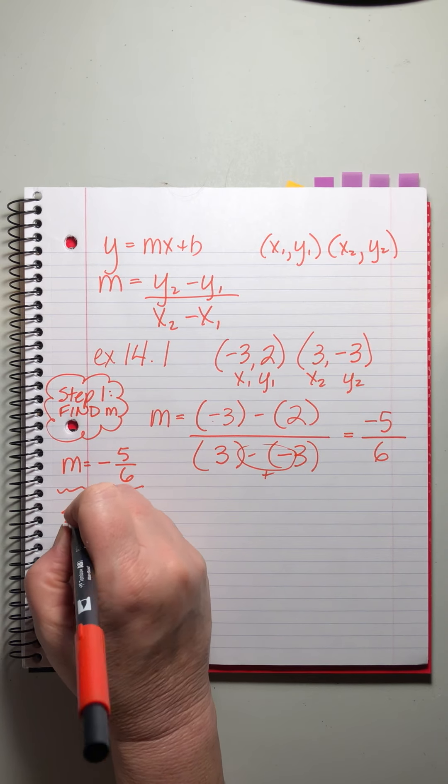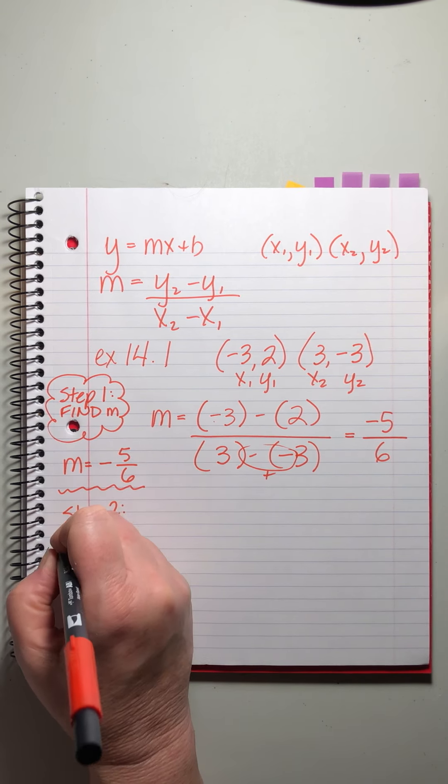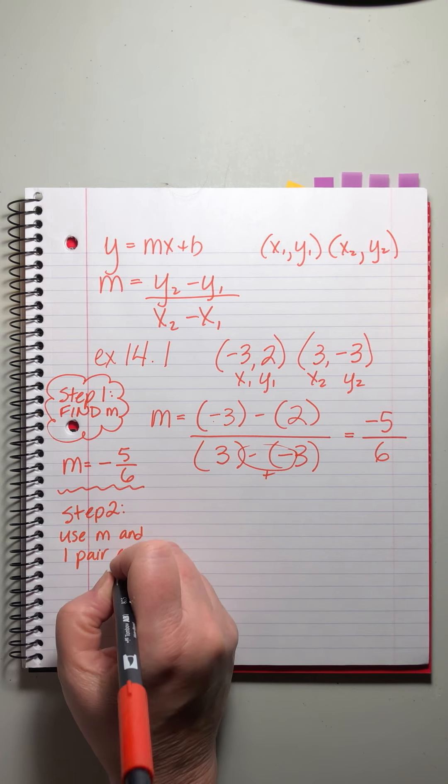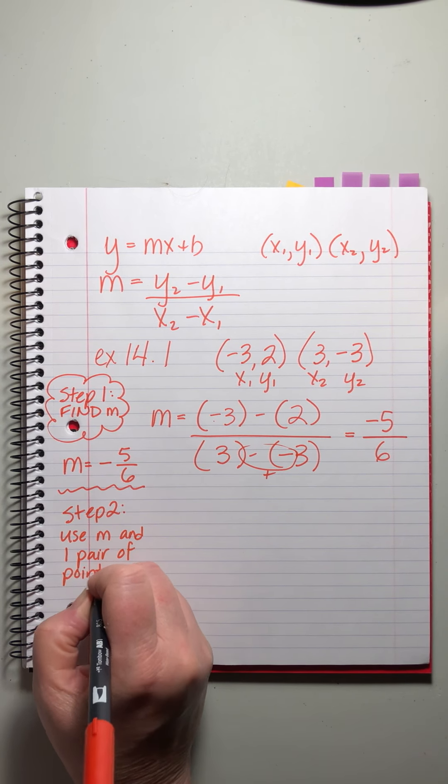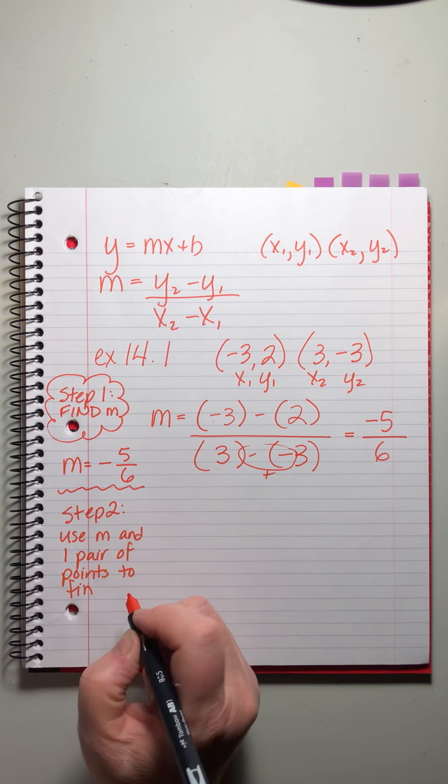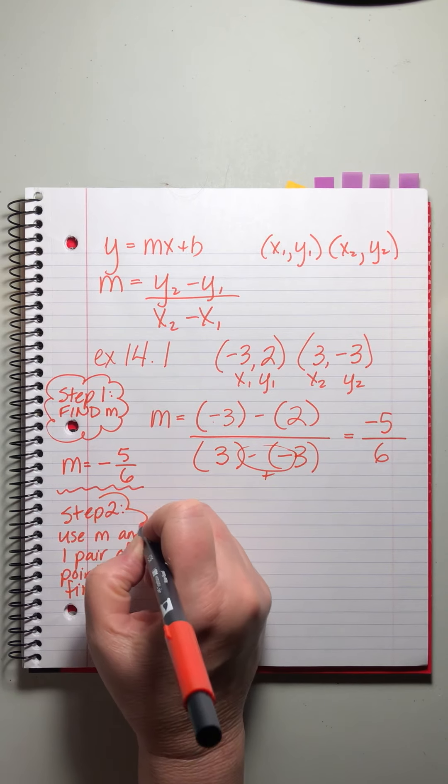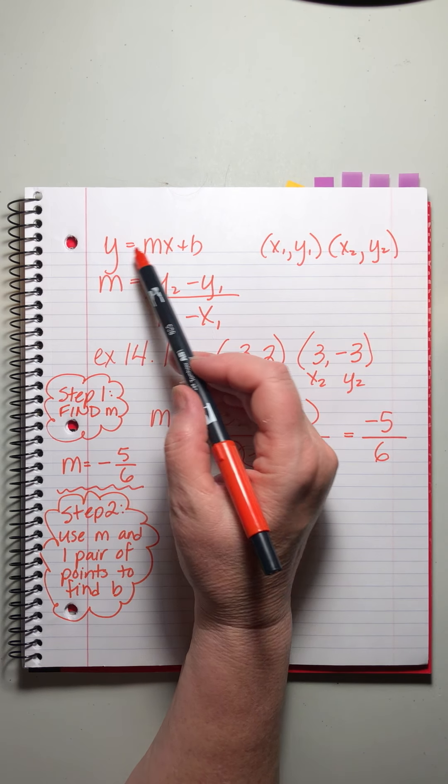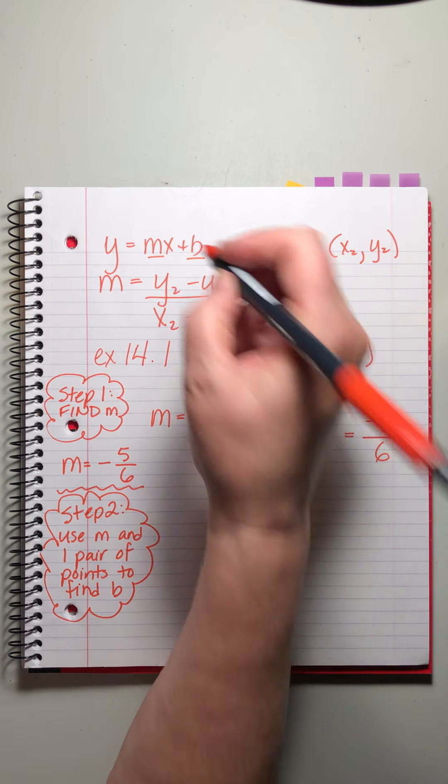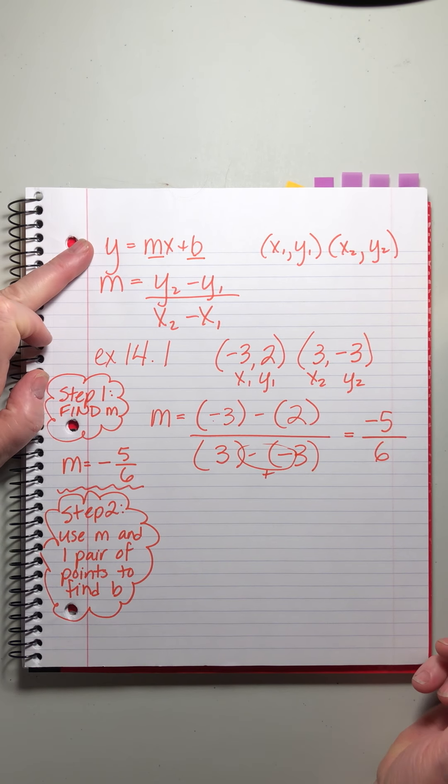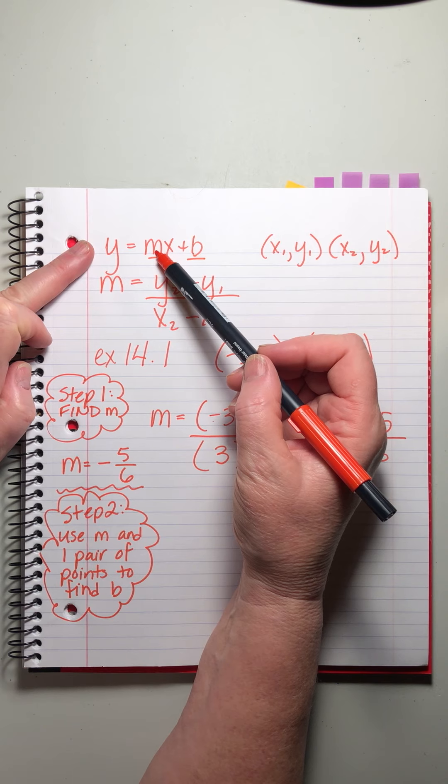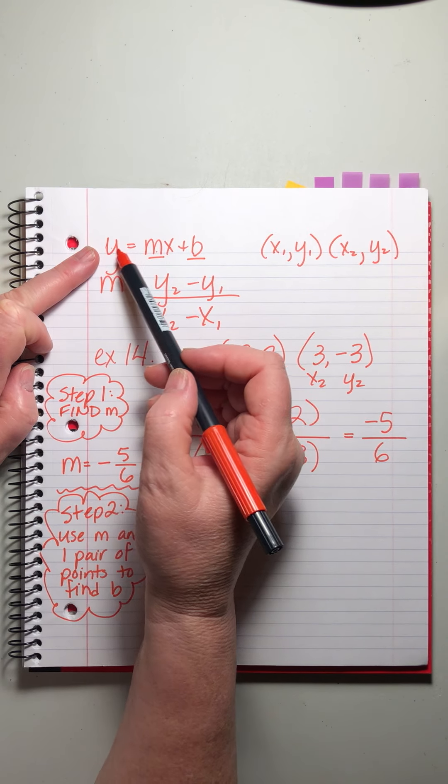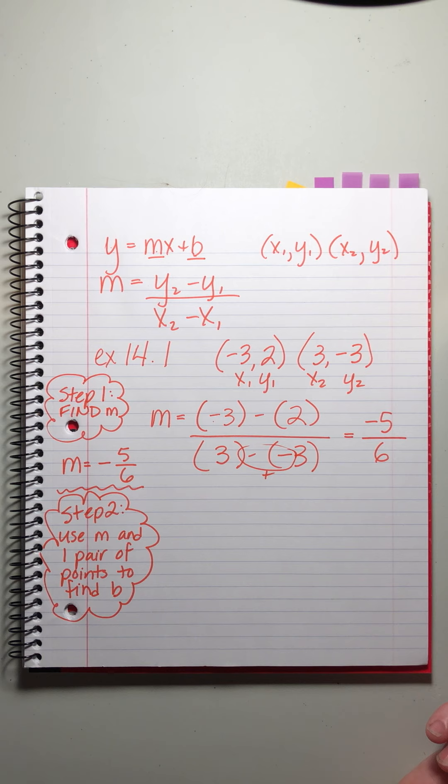We're ready for step two. All right. Now what we're going to do, we still have to find the y-intercept, right? In order to write the equation of the line, we need to find the m and the b. We've already found the m. Now what we can do is we can take this equation. We can plug in the m, which we know, and we can choose either pair of points and use them for the x and the y. That will fill three of the four holes and we'll be able to solve for b. Huh. Cool. Right?